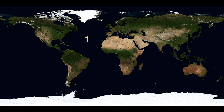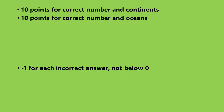We have 3 oceans: the Atlantic, the Pacific, and the Indian Ocean. Or 5 oceans with the Southern or Antarctic Ocean and the Arctic Ocean. Or some calculate 4. Again, 10 points are awarded if the number and the 3 to 5 names are correct, and every mistake is worth 1 minus point.